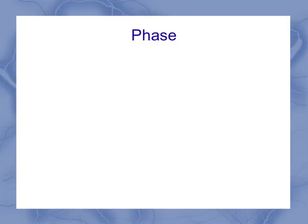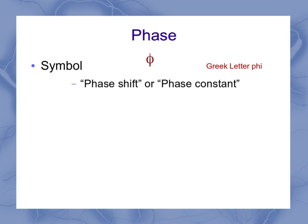Then we get to the phase. And it's got the symbol here, which is the Greek letter φ. And it could be called the phase, but it can also be called the phase shift or the phase constant.